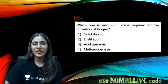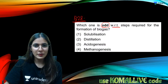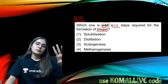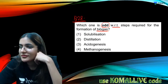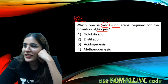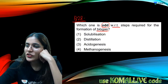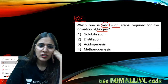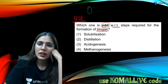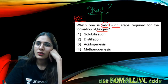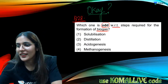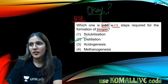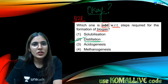Question twenty-eight: which of the following is odd with respect to steps required in biogas formation? Three steps are: solubilization, acidogenesis, and methanogenesis. Distillation has no role in biogas production — it is used in alcohol production. So distillation is the odd one out.